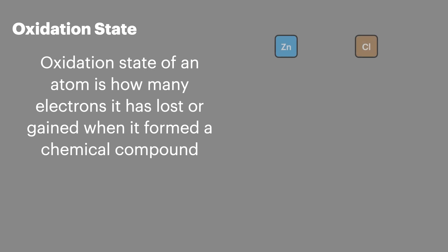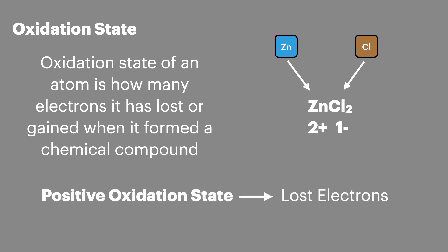If we look at zinc combining with chlorine to make zinc chloride, zinc has an oxidation state of plus two and the chlorine has an oxidation state of minus one. A positive oxidation state shows that the atom has lost electrons and been oxidized while a negative oxidation state shows the atom has gained electrons and been reduced.